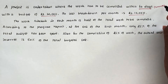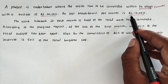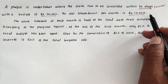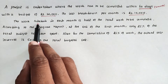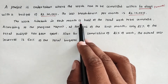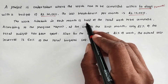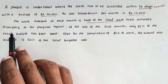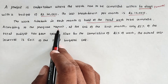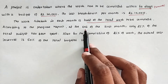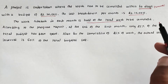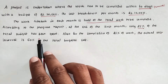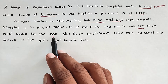For the first month we have to spend 10,000, and for the second month we have to spend another 10,000. The work scheduled each month is half of the total work. According to the program progress report, at the end of the first month only 25% of the total budget has been spent.